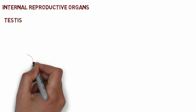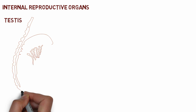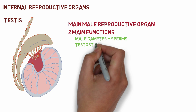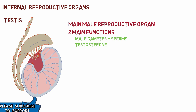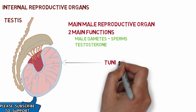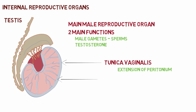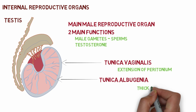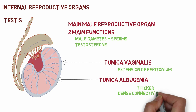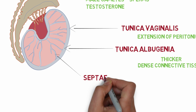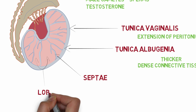Now let's talk about the internal reproductive organs. The first internal reproductive organ is the testes. The testes is the main male reproductive organ that has two main functions: first, to produce the male gametes — the sperms — and second, the production of the male reproductive hormone, testosterone. The testes has an outer covering called the tunica vaginalis, which is an extension of the peritoneum, and an inner covering called the tunica albuginea, which is thicker and made up of dense connective tissue. The tunica albuginea sends various septae into the parenchyma of the testes, dividing it into numerous lobules.